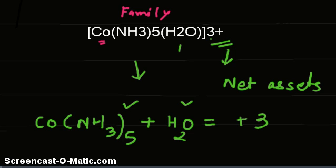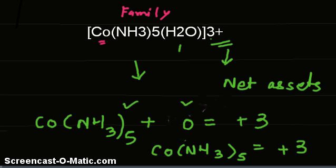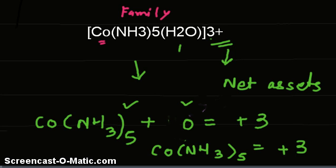We know that Co(NH3)5 plus H2O equals +3. In the next step, we would eliminate ammonia.